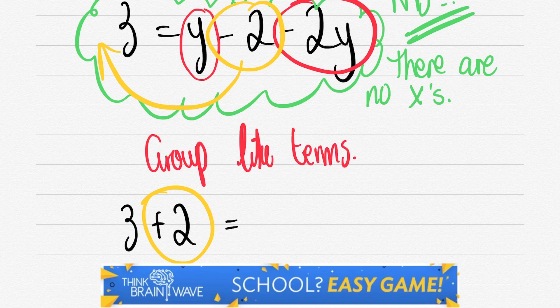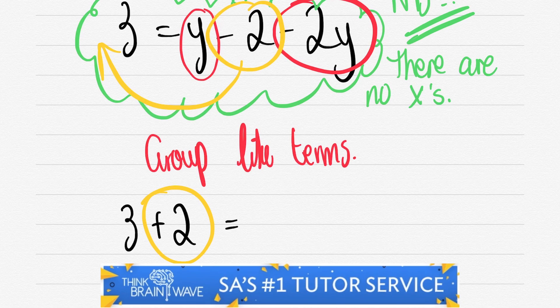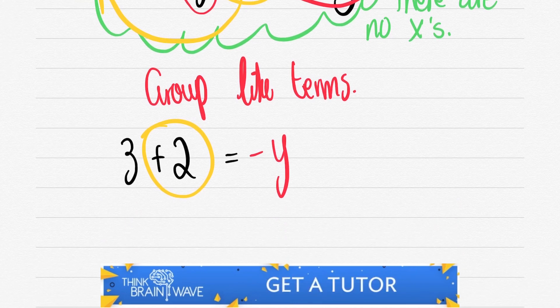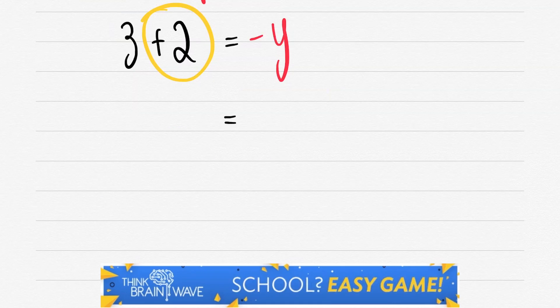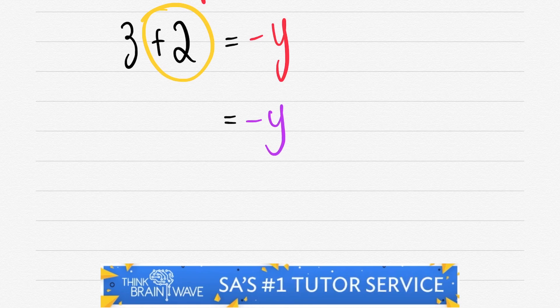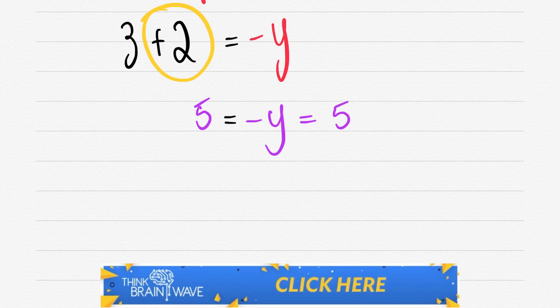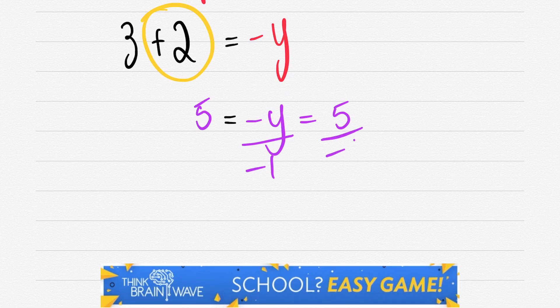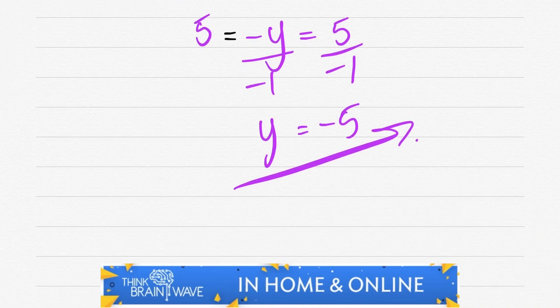We say that's equal to -y or y - 2y giving you -y. So I've simply done it already for us. You can see I've got -y. Cool. Three plus two is five and we carry the -y down. So therefore -y = 5. We divide both sides by minus one. We get y = -5.